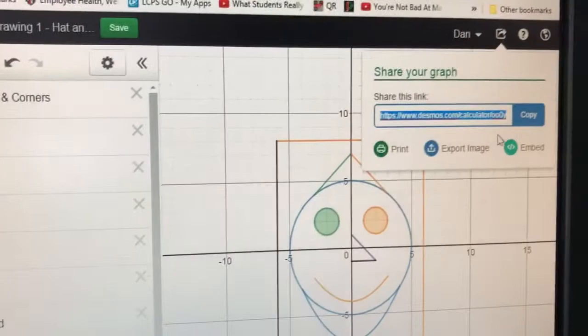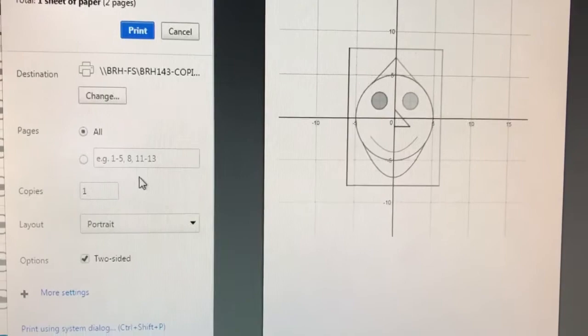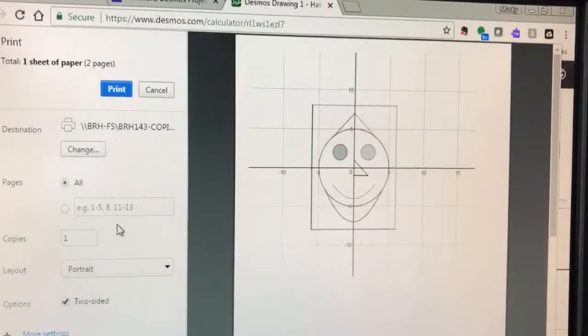Also, don't forget you got to print that sucker out. So when you go to print it out, click that little print, choose the appropriate printer, and then print that thing out because you're going to need to submit that to us as well.